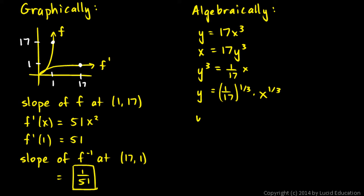So the derivative here, y prime, is going to be 1/17th to the 1/3rd, the constant just stays out front, times 1/3rd times x to the power of this minus 1. 1/3rd minus 1 is negative 2/3rds. Okay. Now we have to find the slope of the inverse function at x equals 17. So this is the inverse function, and this is the derivative or the slope of the inverse function. So we just need to plug in 17 right there.